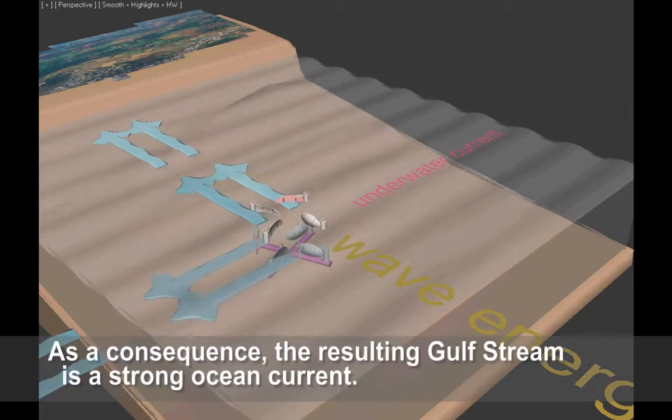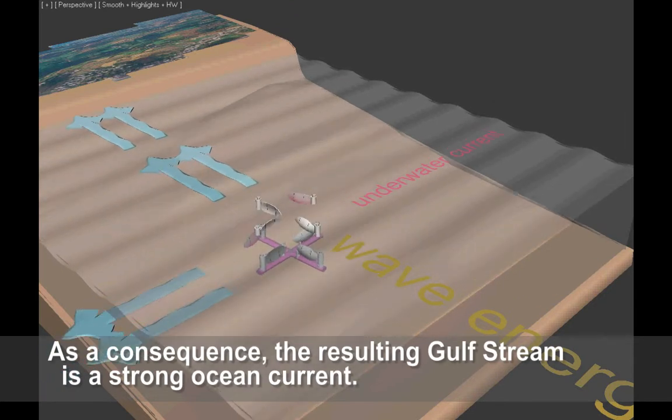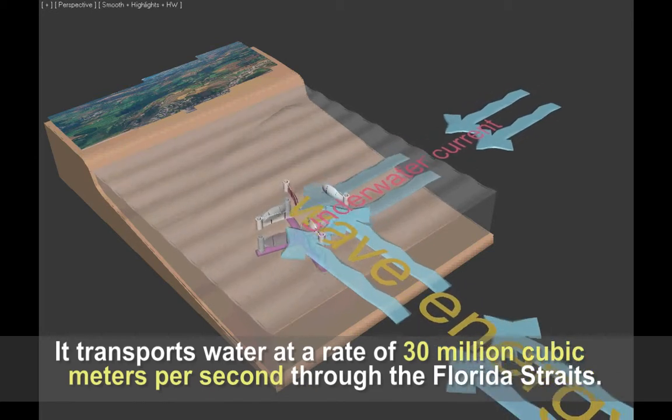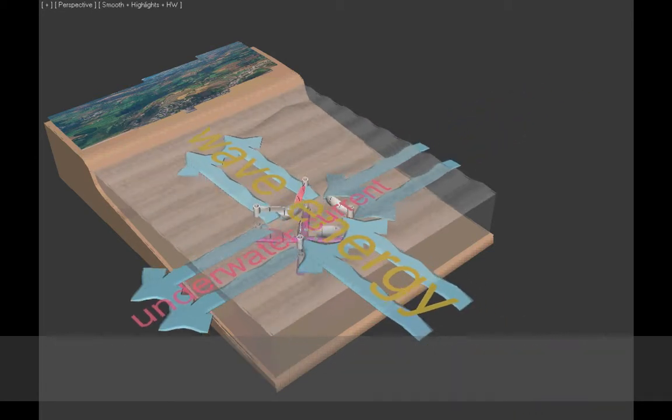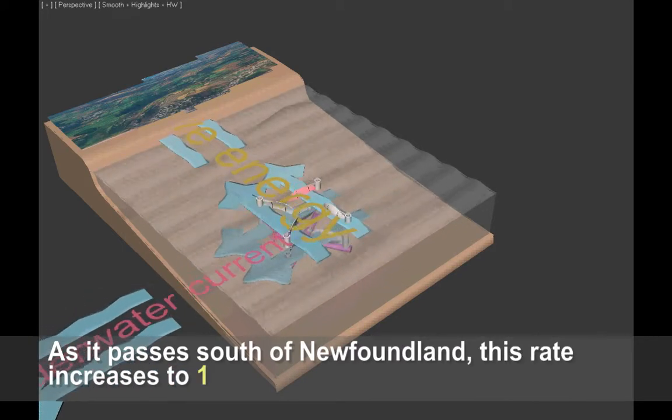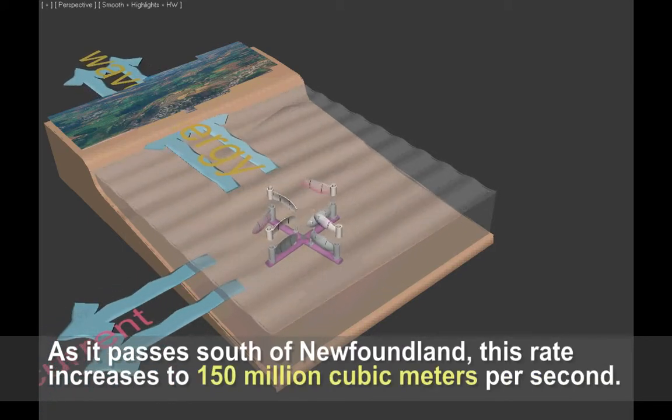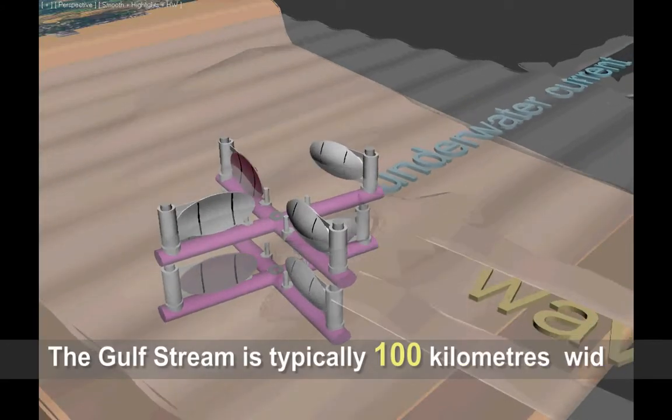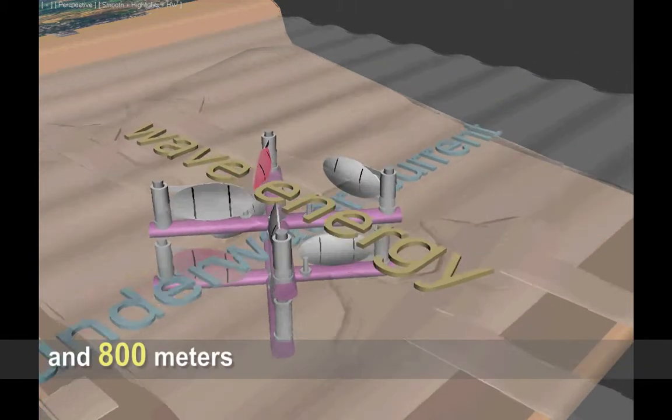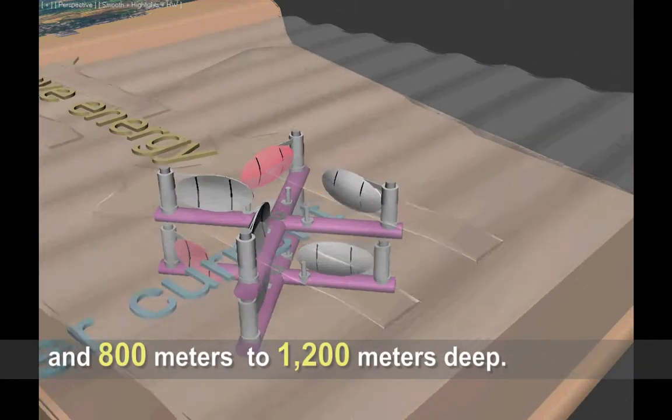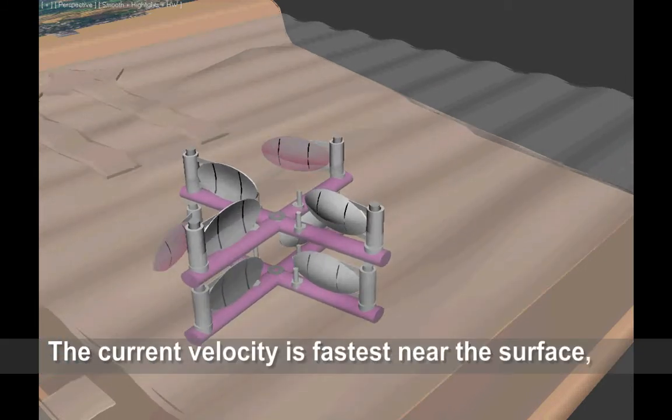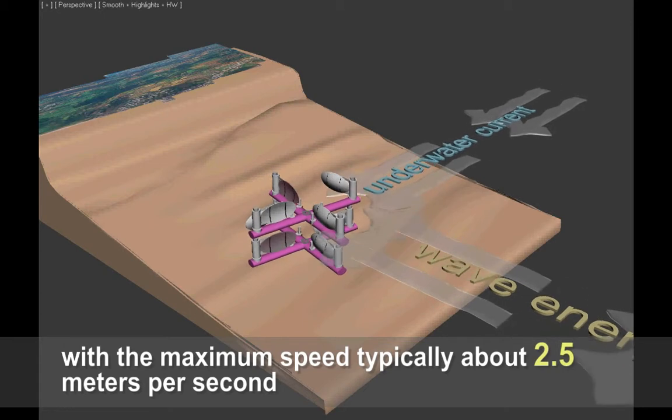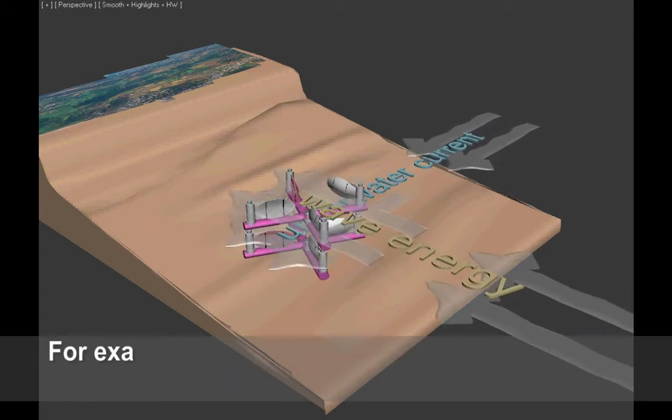As a consequence, the resulting Gulf Stream is a strong ocean current. It transports water at a rate of 30 million cubic meters per second through the Florida Straits. As it passes south of Newfoundland, this rate increases to 150 million cubic meters per second. The Gulf Stream is typically 100 kilometers wide and 800 meters to 1200 meters deep. The current velocity is fastest near the surface with the maximum speed typically about 2.5 meters per second.